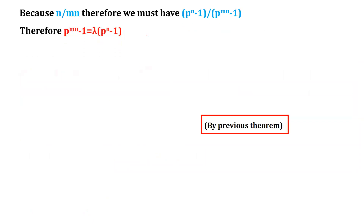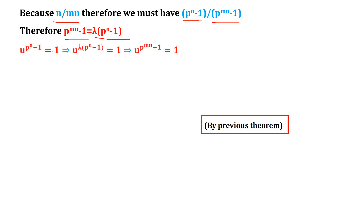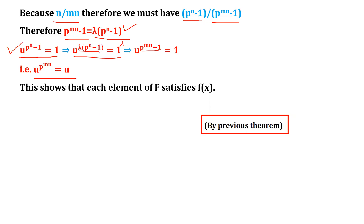Now, since n divides mn, by a result from number theory, p^n minus 1 must divide p^(mn) minus 1. So we can write p^(mn) minus 1 equals lambda times (p^n minus 1) for some integer lambda. Raising u^(p^n - 1) equals 1 to the power lambda, we get u^(p^(mn) - 1) equals 1, which gives u^(p^(mn)) equals u. This shows each element of F satisfies f(x) equals x^(p^(mn)) minus x.